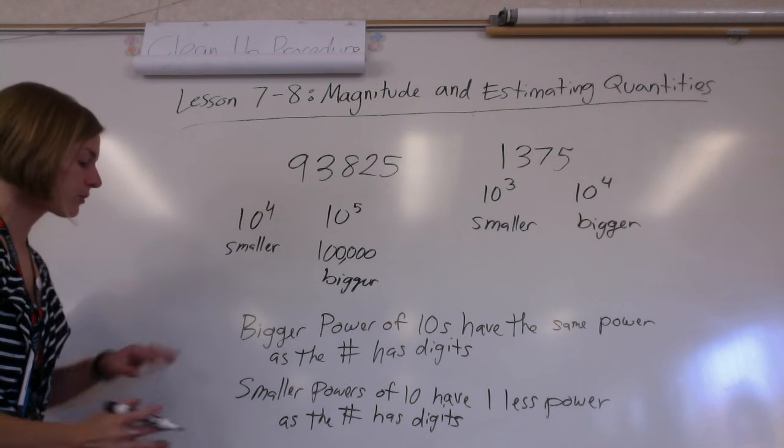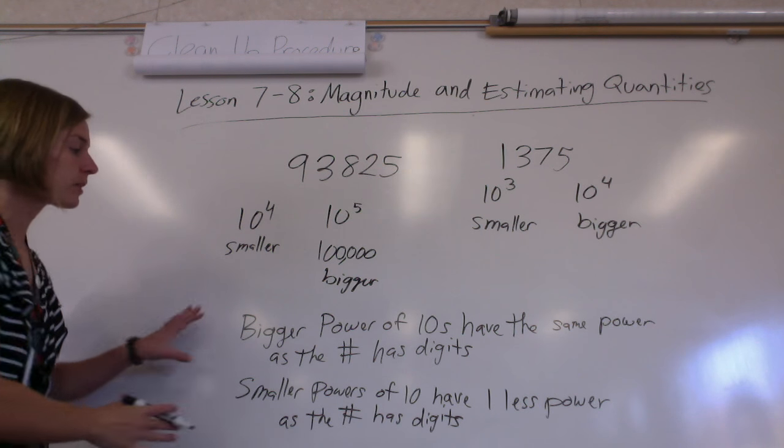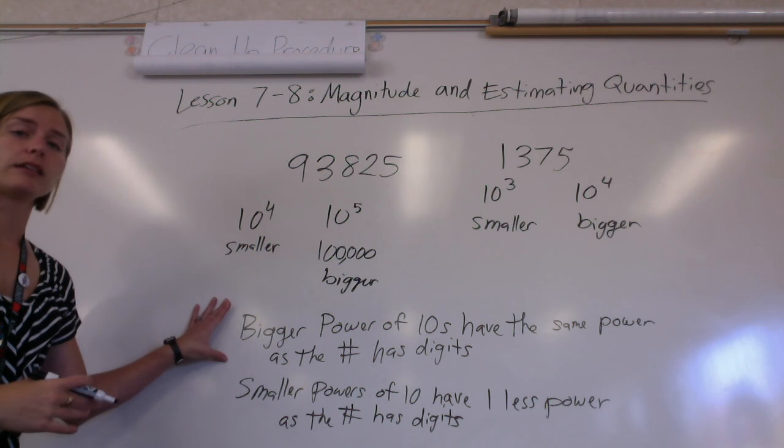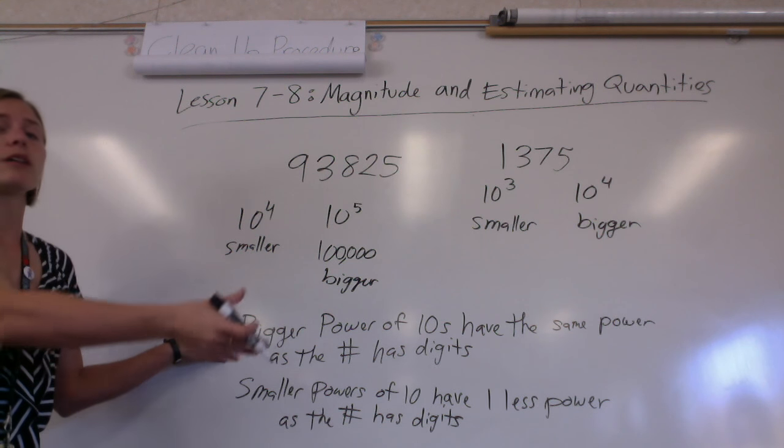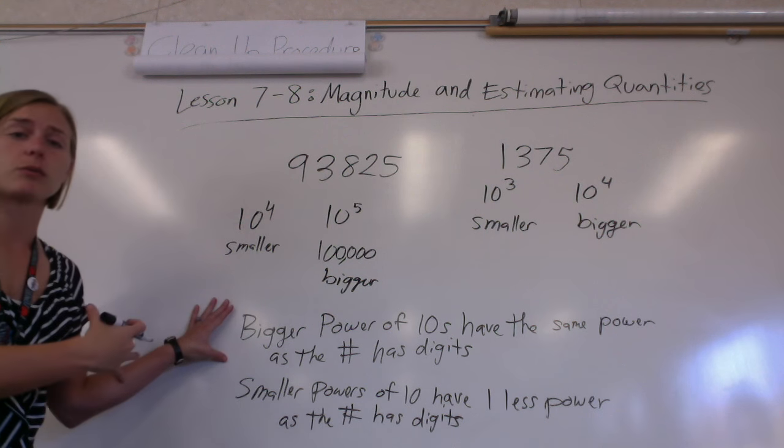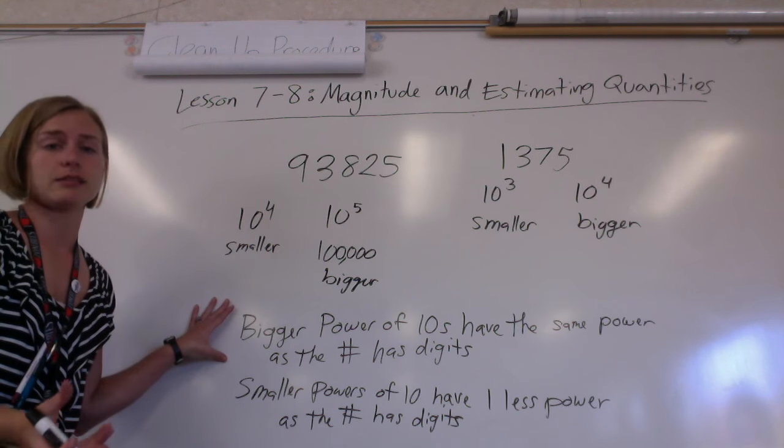Here's the general rule: the bigger power of 10 has the same power as the number of digits. So with five digits the bigger one has a power of five, or with four digits the bigger number has a power of four. The smaller power of 10 has one less power than the number of digits. Just remember the bigger one and then it's easy to say the smaller one is one less.